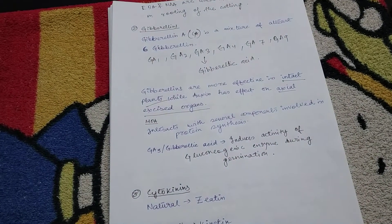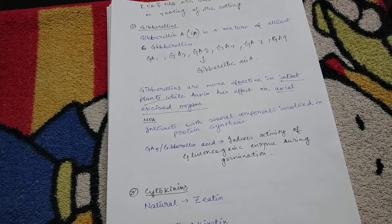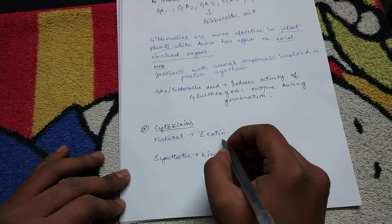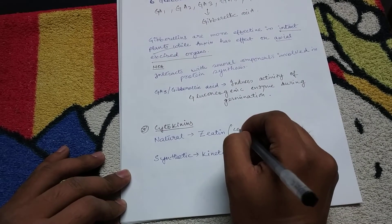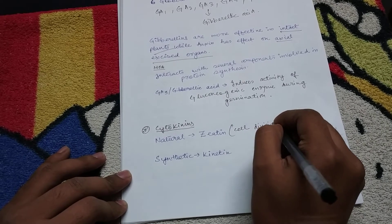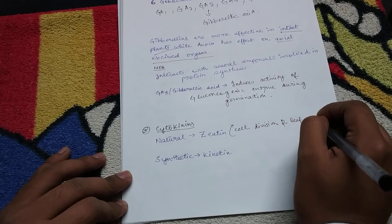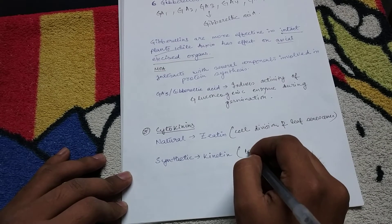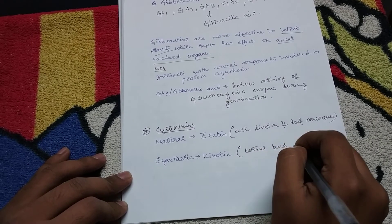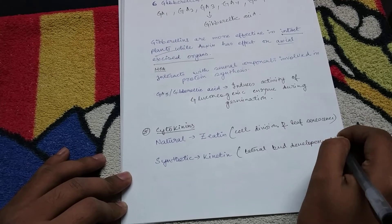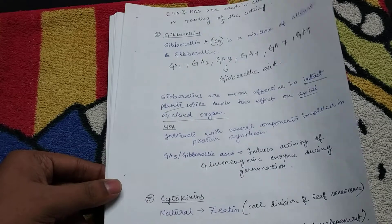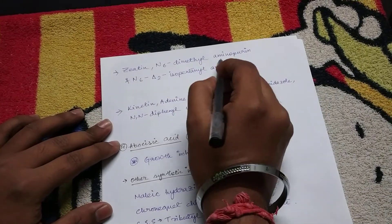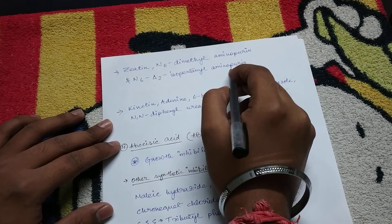Now the third plant growth regulator is cytokinin. Some natural cytokinins like zeatin help in cell division and leaf senescence. Synthetic cytokinins like kinetin help in lateral bud development. Zeatin, N6-dimethyl aminopurine, N6-delta-2-isopentenyl aminopurine are some naturally occurring cytokinins.